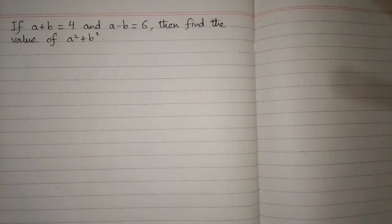If a plus b is equal to 4 and a minus b is equal to 6, then find the value of a square plus b square.